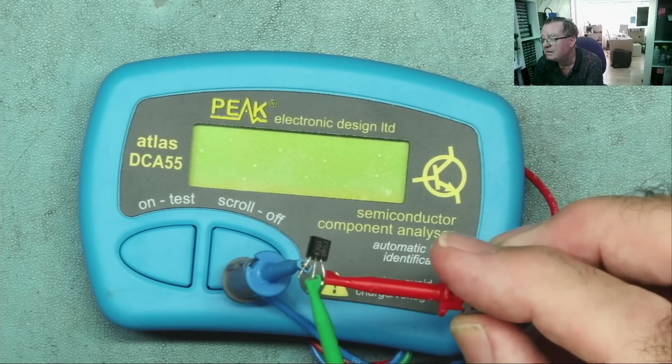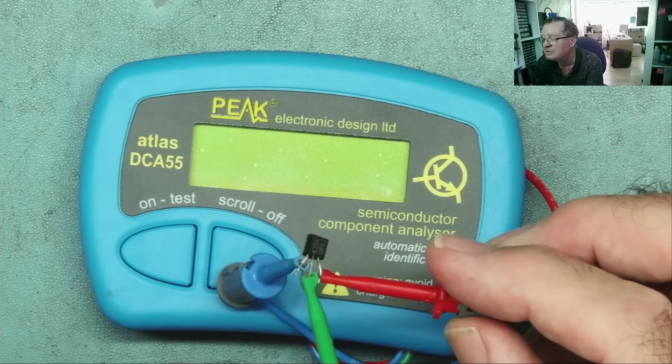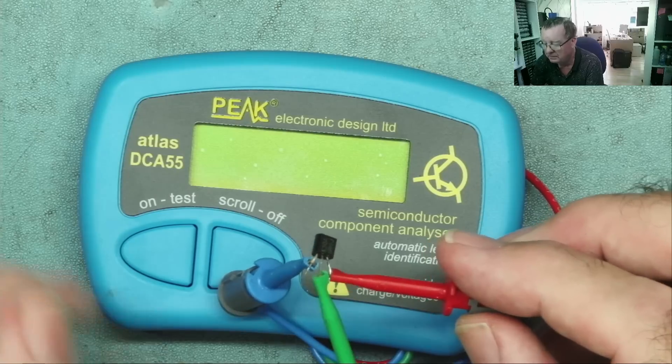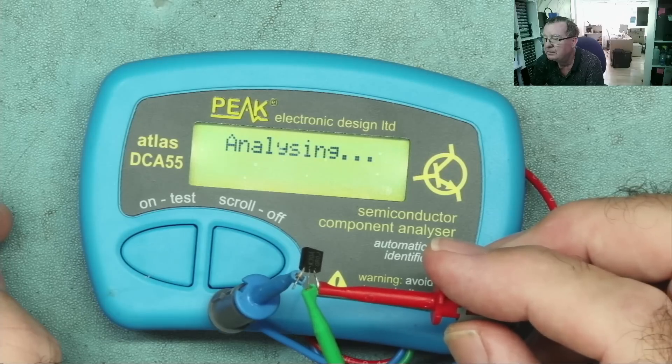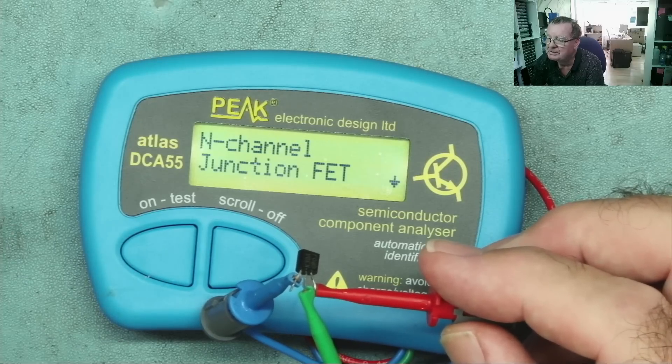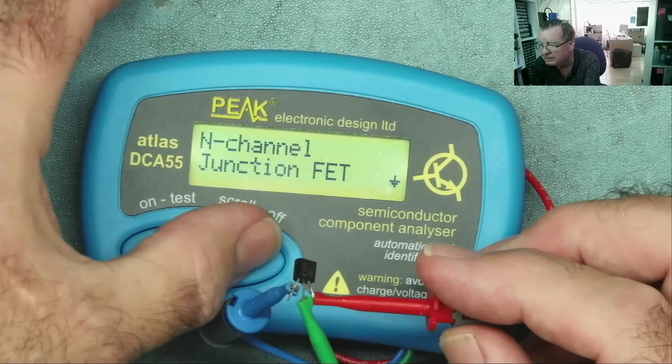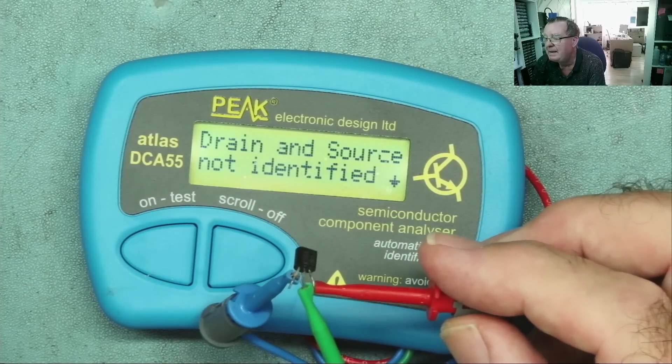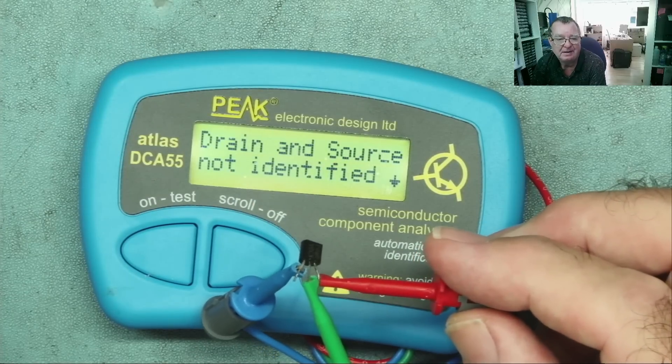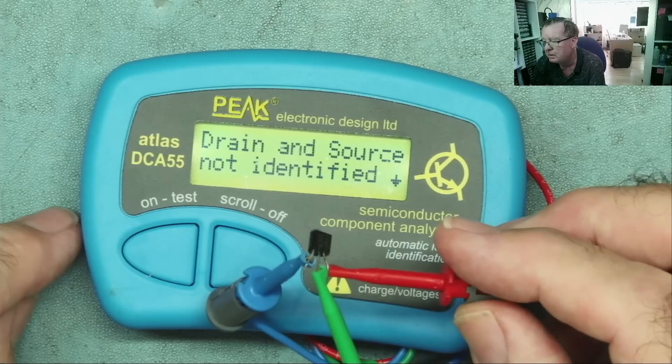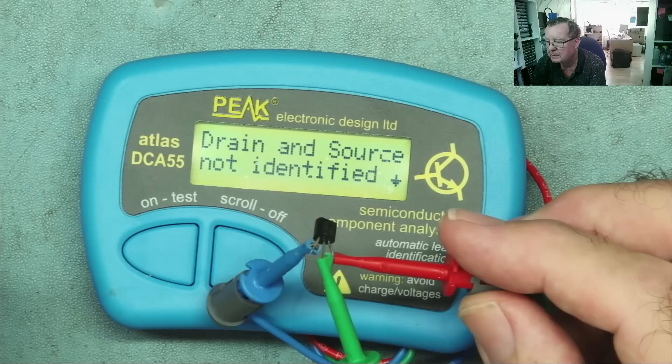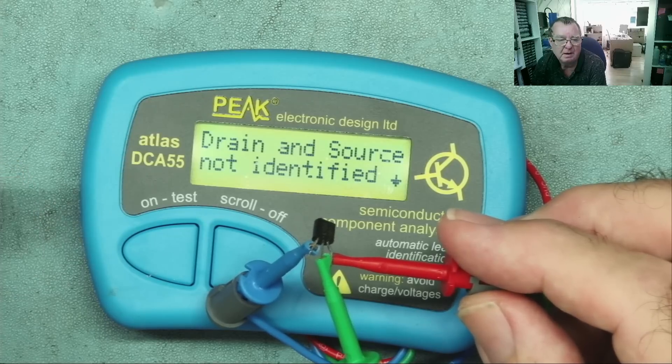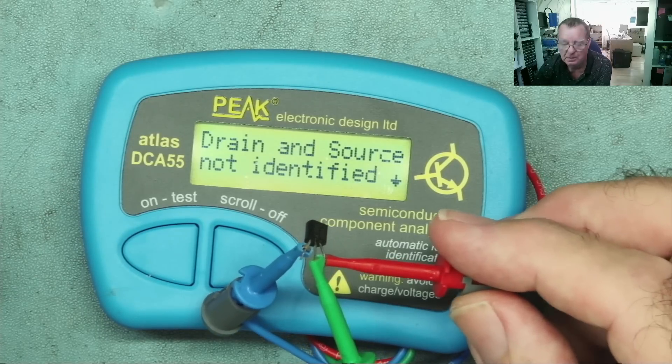Let's have a look at our JFET. So here is the component analyzer. We know the gate on the center is the gate. Switch it on. Analyzing. And it tells us this is an N-channel junction FET or JFET. And it says drain and source not identified. It doesn't know which is the drain and which is the source.